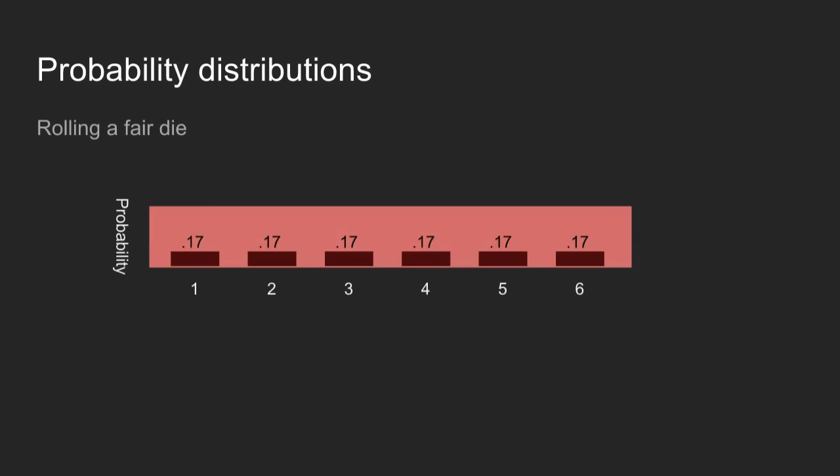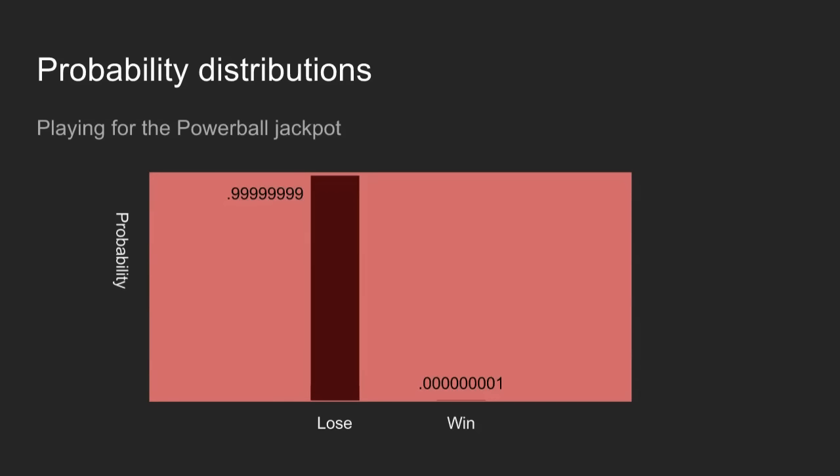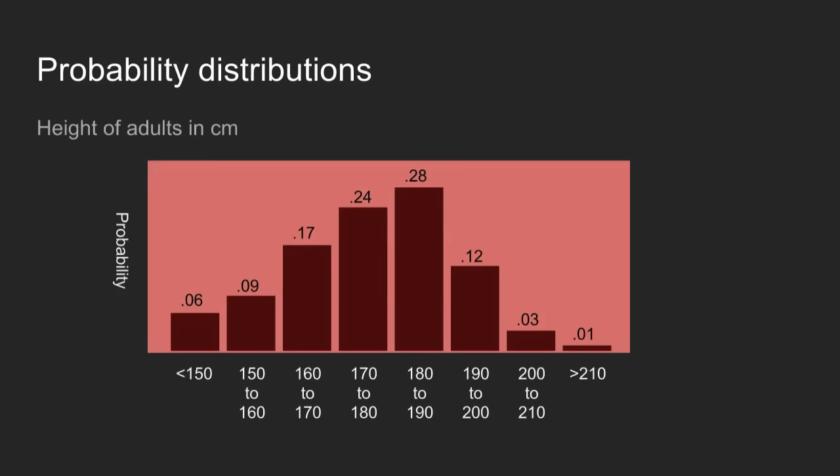If I roll a die and hide the result, you might believe about one-sixth that it's a one, or a two, or three, or four, or five, or six — until I show you the result. So probabilities can represent what you believe about something before you measure it. Similarly for Powerball tickets.